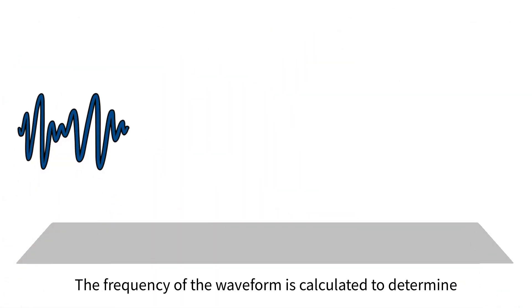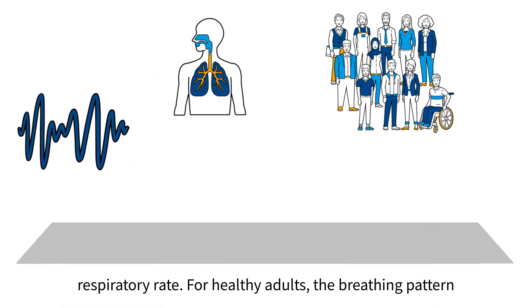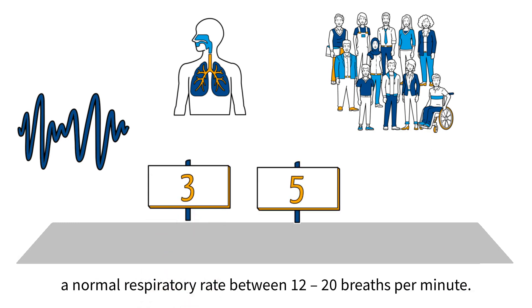The frequency of the waveform is calculated to determine respiratory rate. For healthy adults, the breathing pattern occurs approximately every three to five seconds, which signifies a normal respiratory rate between 12 and 20 breaths per minute.